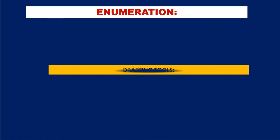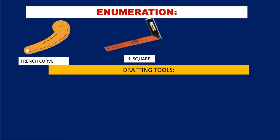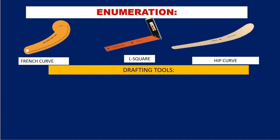Enumerate all the drafting tools used in sewing. The drafting tools used in sewing are: French curve, L square, and hip curve.